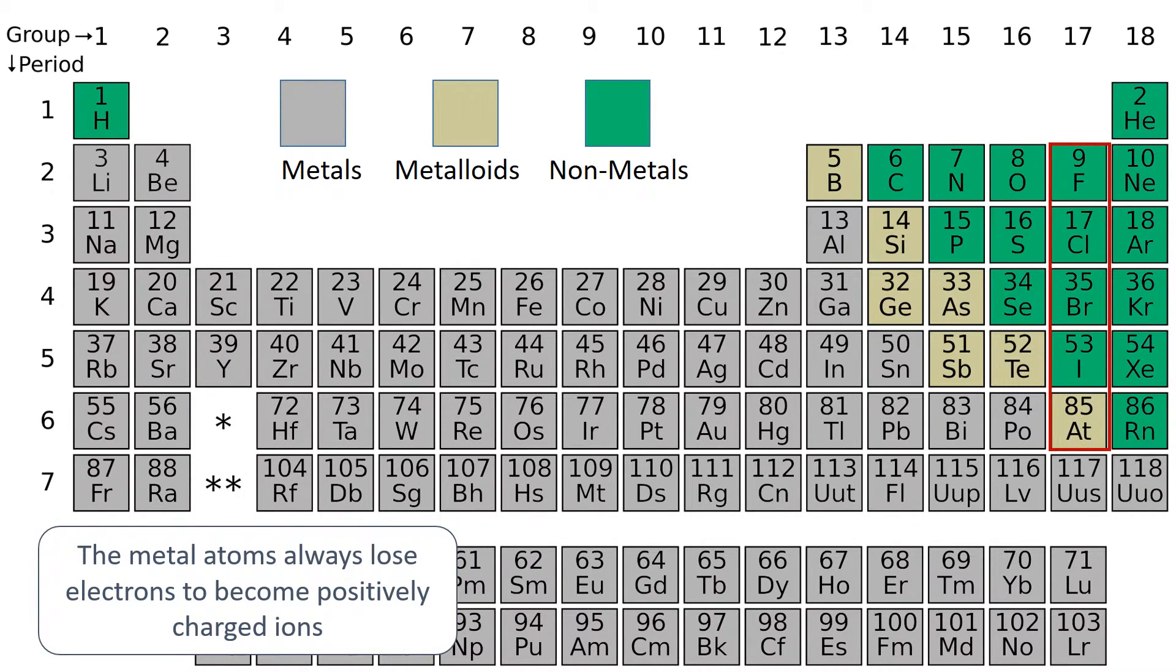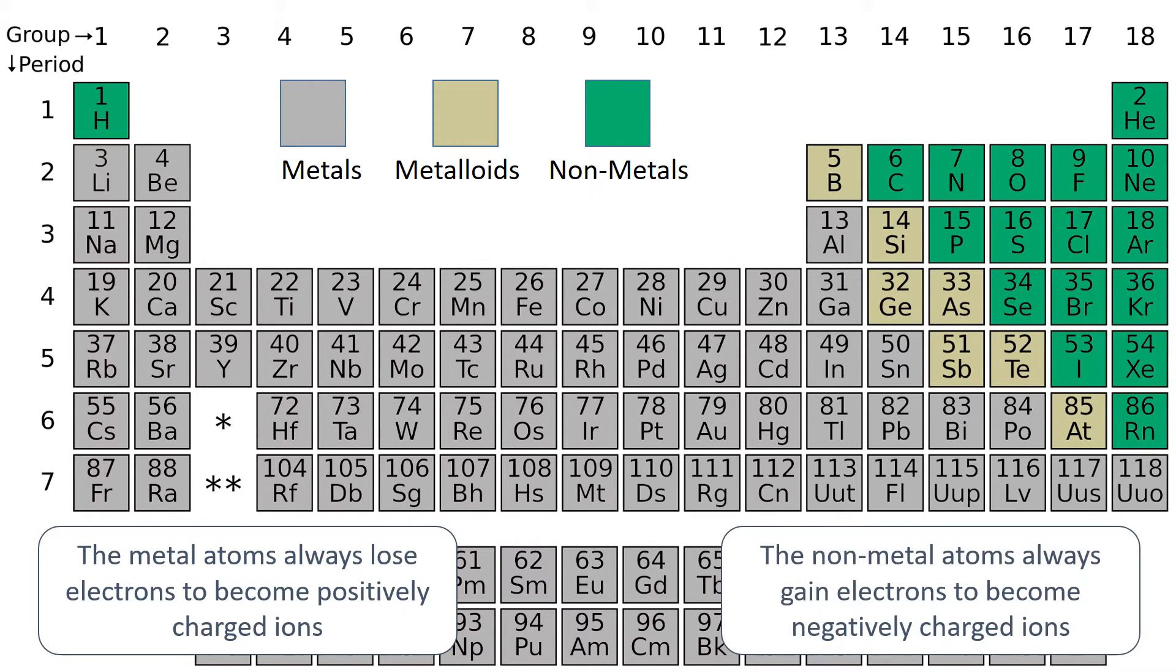In group 7, it's easiest to gain one electron to form a full outer shell. And in group 6, elements need to gain two. As all the non-metals will gain electrons to form a full outer shell, they will always form the negatively charged ions.